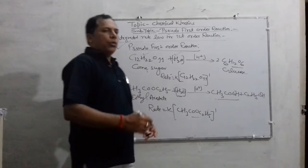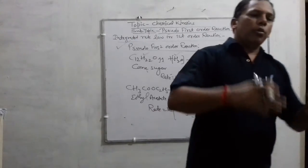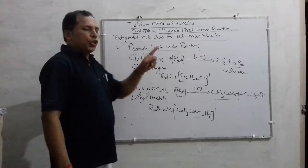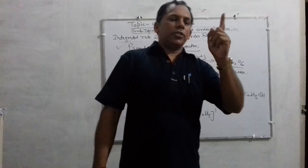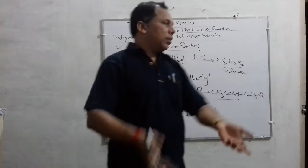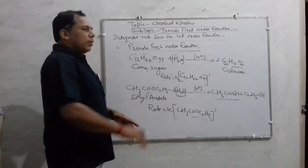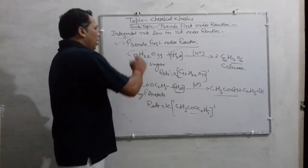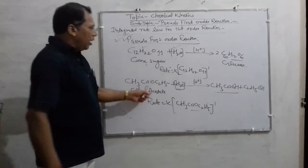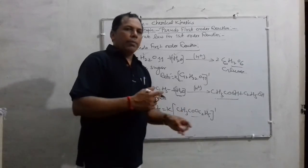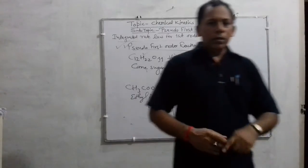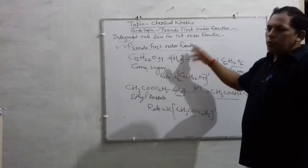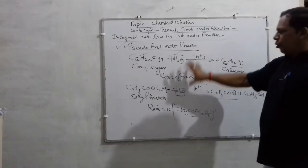You have to remember why this is pseudo, what is the difference, and why it is converting to pseudo first order. The clear definition is: a reaction which is truly not a first order reaction, but under certain conditions the reaction becomes first order — that reaction is termed a pseudo first order reaction. Good examples are the inversion of cane sugar and the hydrolysis of esters.